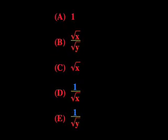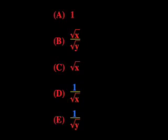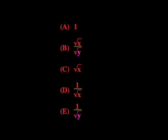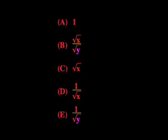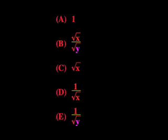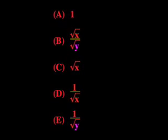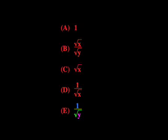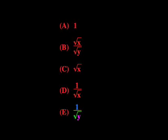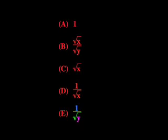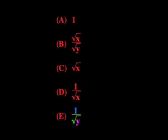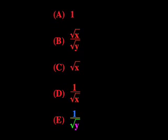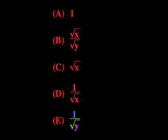Both D and E have a one on top of the fraction. We can also notice that two of the fractions have the square root of Y on the bottom: B and E. Now we have the right answer that was included in all of our groups — answer E. It has a one on top of a fraction with the square root of Y on the bottom.